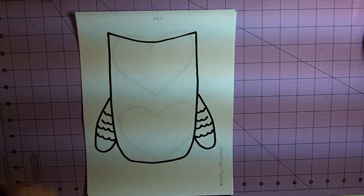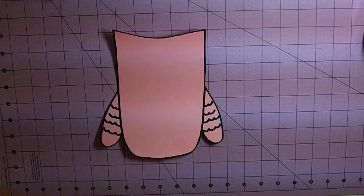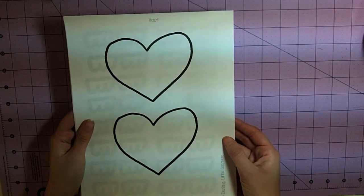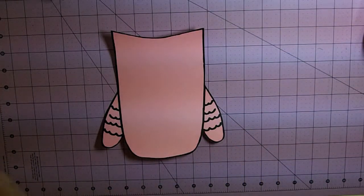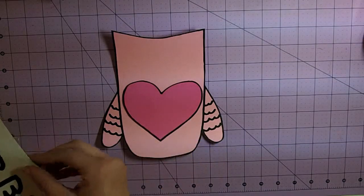You're going to need to start out with the body. Then you are going to need to cut out one heart. That's going to be for the inside of her belly.